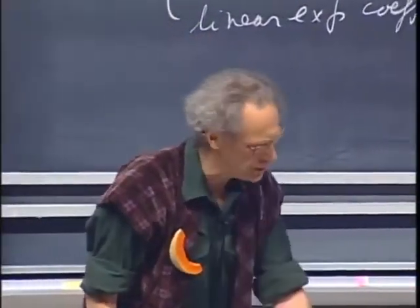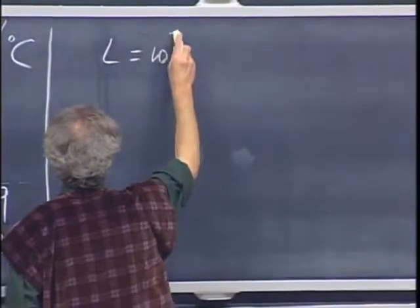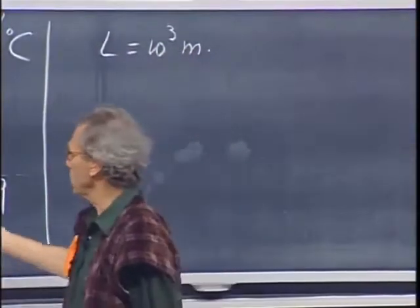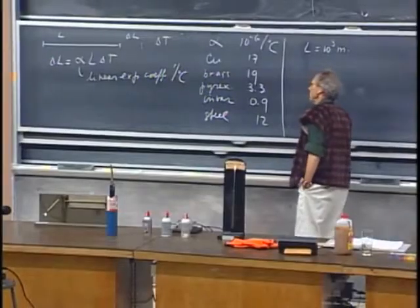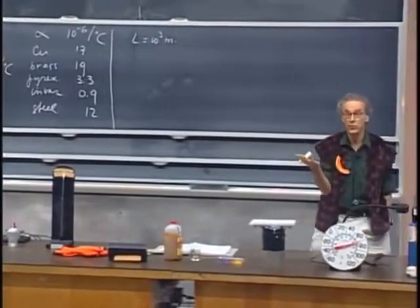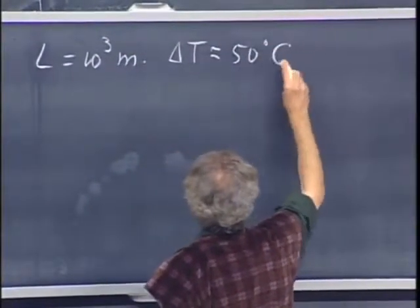If we use these numbers, let us look at the expansion of, for instance, a railroad. We take a stretch of rail which is, say, a thousand meters. We take steel, iron, so this is the expansion coefficient, roughly, and we compare a cold day with a hot summer day. A cold winter day, minus 15 degrees centigrade, and a hot summer day, plus 35 degrees centigrade. So delta T would be about 50 degrees centigrade.